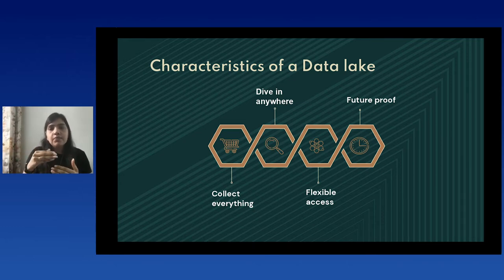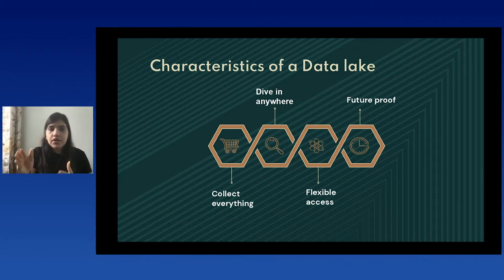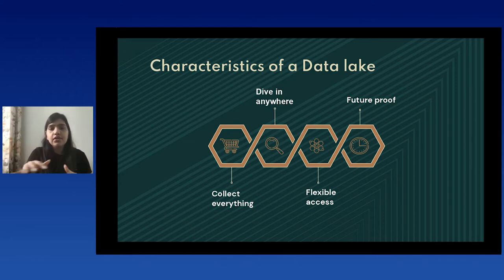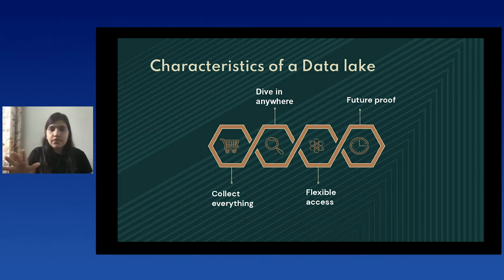As business cases evolve, the data structure also evolves, so the schema of the data you are ingesting will evolve. This means you have to make your data lake future-proof — when the data structure changes, the base architecture of your data lake should not be disturbed. Design it so that whenever there are data schema changes, the data lake adopts those schema changes on the fly. These are key characteristics of a data lake when designing one.